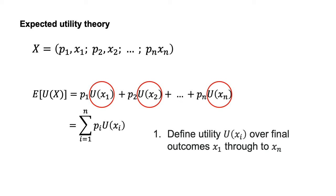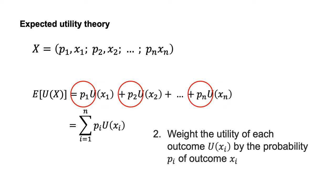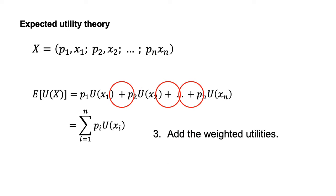1. Define utility U of Xi over final outcomes X1 through to Xn. 2. Weight the utility of each outcome U of Xi by the probability Pi of outcome Xi. 3. Add the weighted utilities.